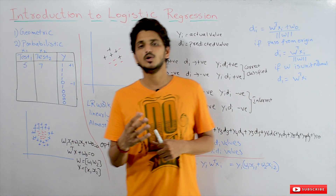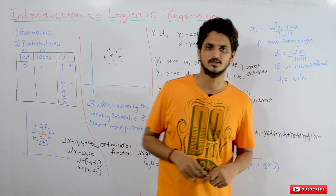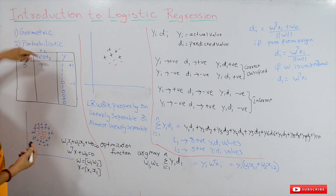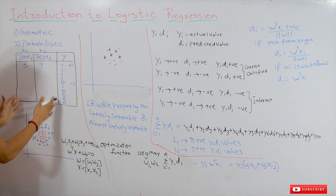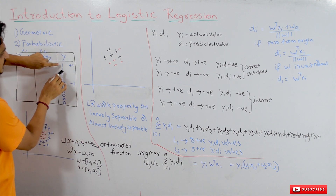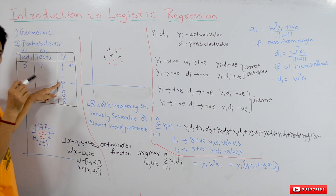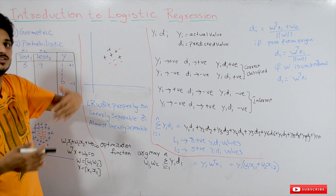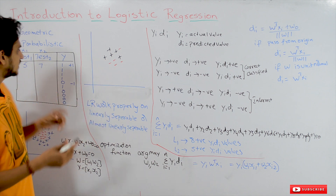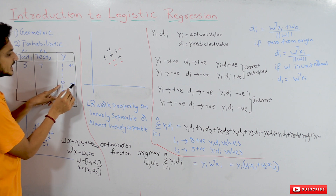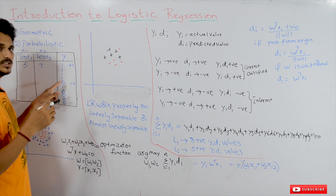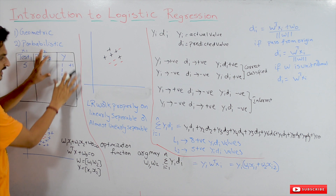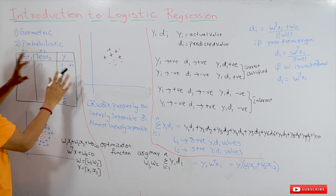Here we will take an example dataset and understand what logistic regression is. The example dataset we consider here is a cancer prediction dataset. It has two columns: test one and test two as input columns, and the output column Y. Y equals one means the patient is having cancer; Y equals zero means the patient does not have cancer. In logistic regression we follow a different notation: positive one means patient has cancer, negative one means patient does not have cancer.